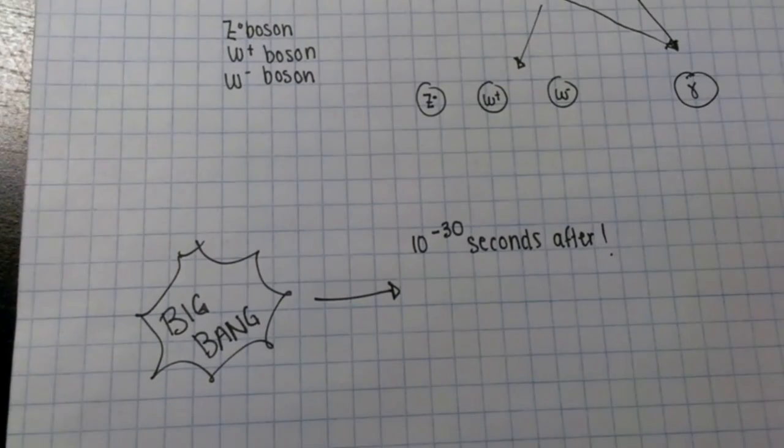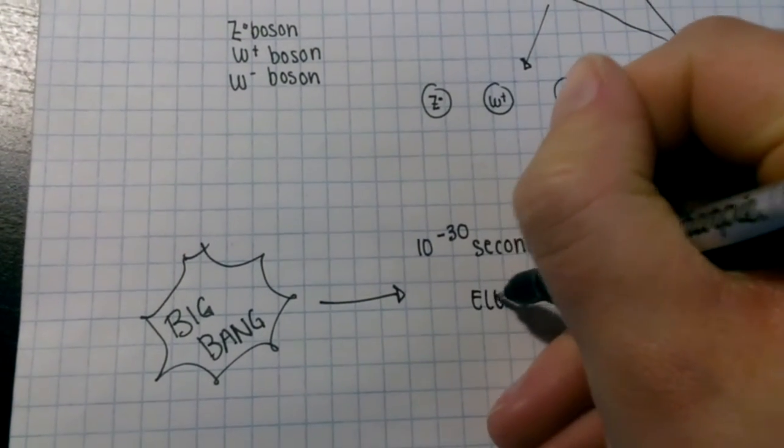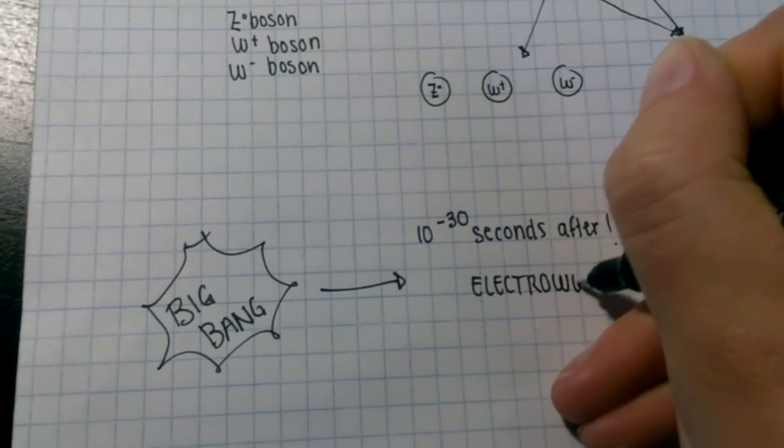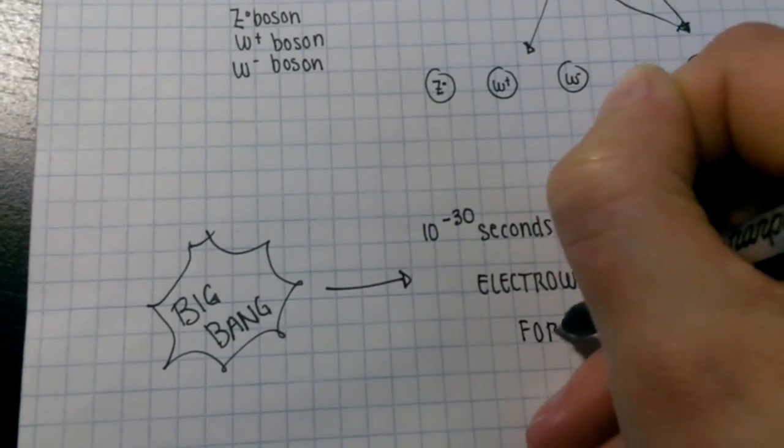There, at that time, the weak and the electromagnetic forces were manifestations of a single force that we call the electroweak force.